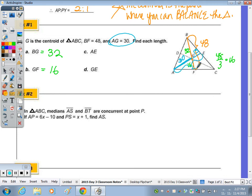And 30 plus 15 is 45. So AE, the whole length is 45, and the shorter segment of that median is 15. Read number two, give yourself a picture. It's good to have a picture when you don't have one.